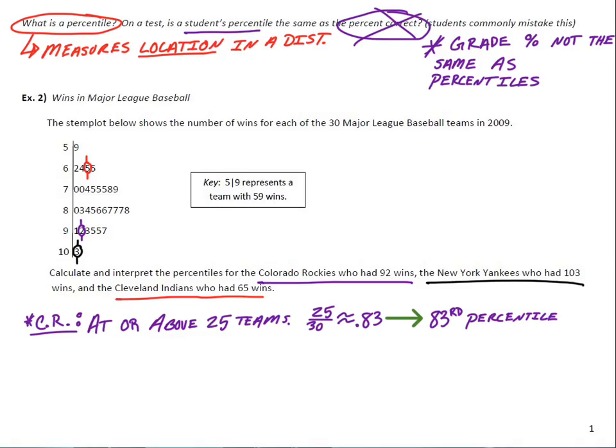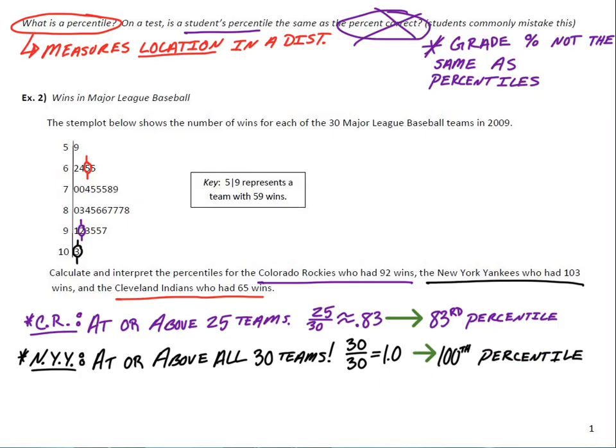And then as for the Yankees, they are the number one team. So for the New York Yankees, they are at or above all 30 win totals. They have the highest one. So the math behind that, 30 out of 30, 1.0 tells us that they are in the 100th percentile. In other words, the data point for the New York Yankees was the highest value observation in the entire set.